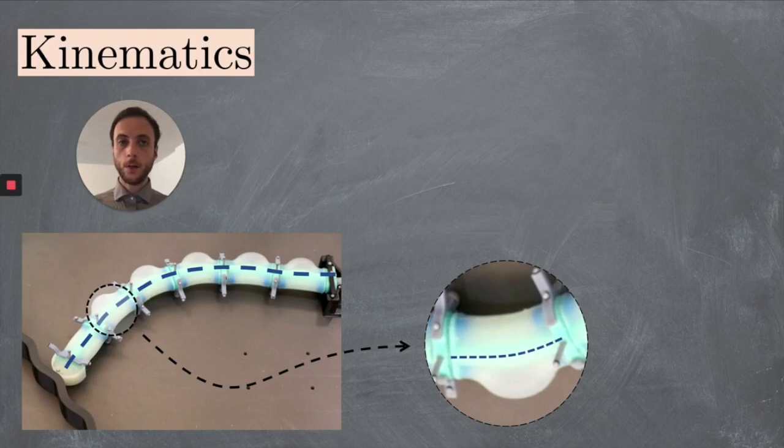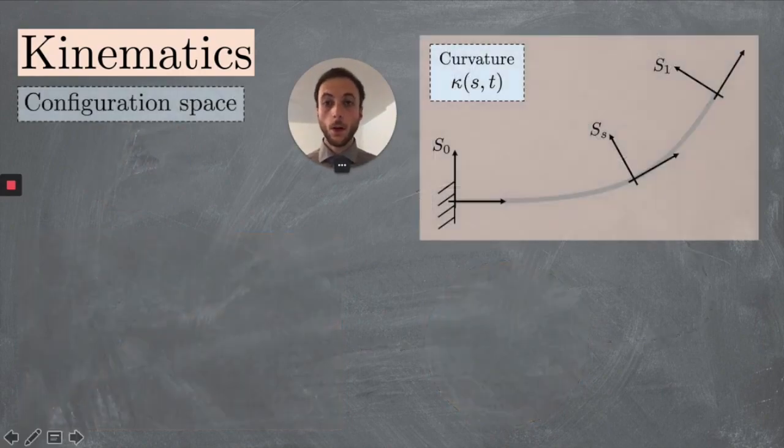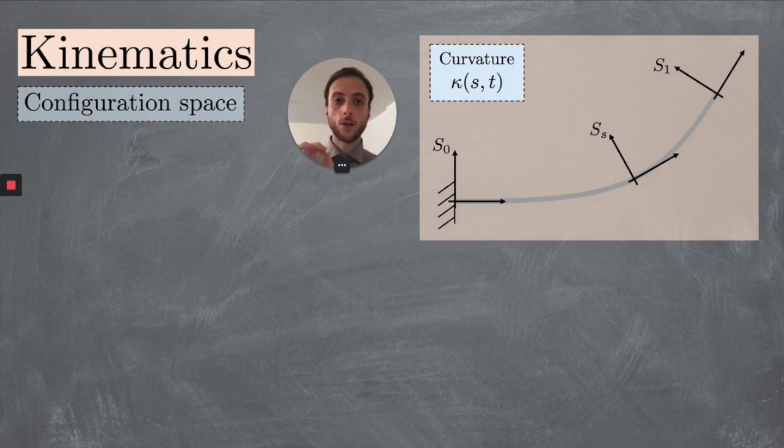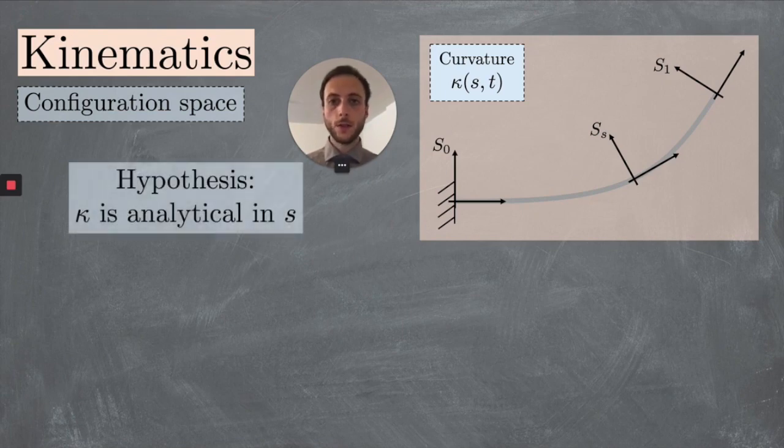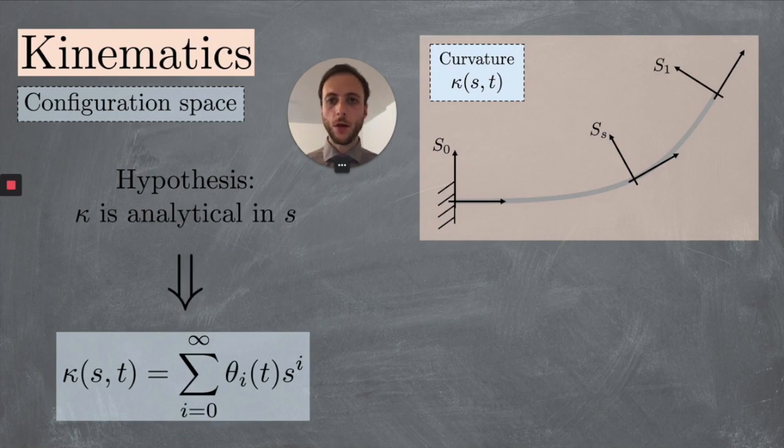Let's consider now a segment of our soft robots. We'll identify it with the behavior of its backbone. The configuration of the backbone can be described with a function, which is called kappa, that connects each time and each position along the robot S with the local curvature. We assume this function to be analytic in S, and this allows us to write it as an infinite summation of monomial terms in S.